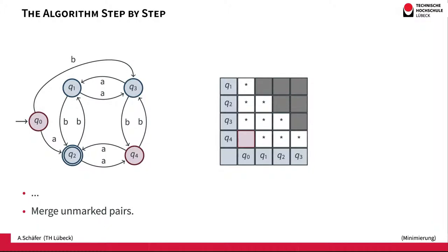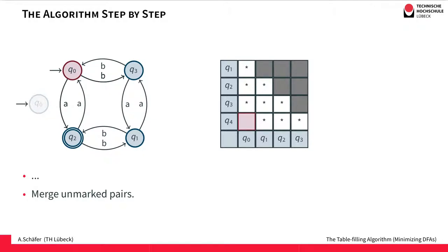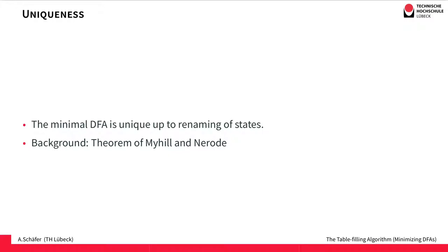The only unmarked pair is {q0, q4}, so we can merge states q0 and q4 into one state. This merging always works: since {q0, q4} is unmarked, we know there is no outgoing edge leading to non-equivalent states — all outgoing edges lead to equivalent states, so the merge produces no conflicts. Finally, a note on background: the minimized deterministic finite automaton is unique up to renaming of states. There is also another basis for this algorithm — the so-called Myhill-Nerode theorem — which we will not consider in detail here.